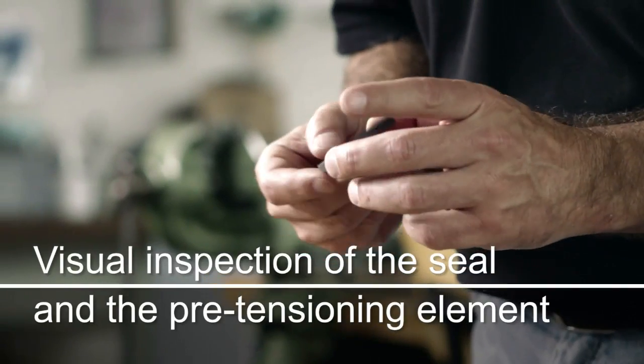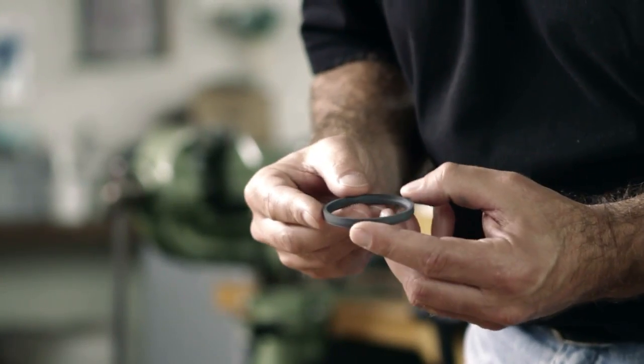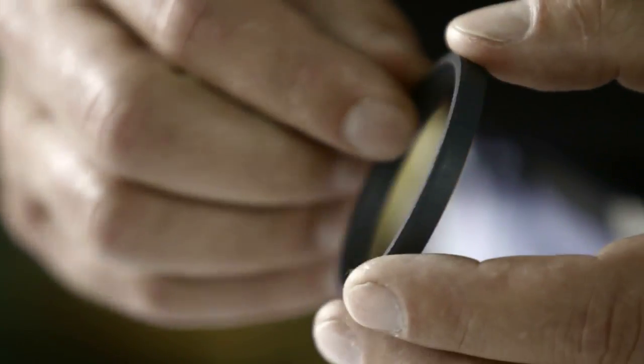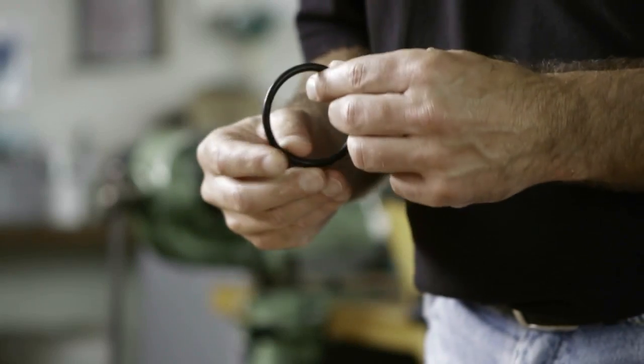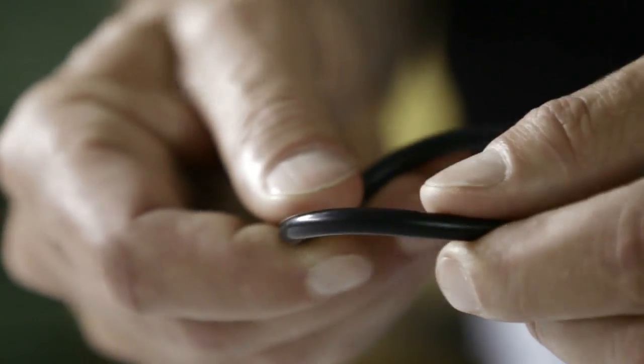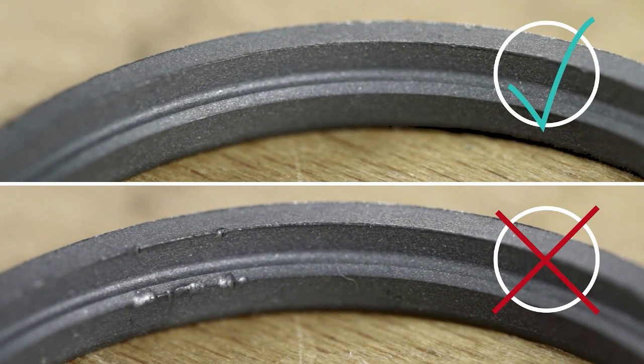Before assembly, the seal must be closely inspected for the following defects. No damage on the circumference of the sealing lip or the outer diameter. Check that the pre-tensioning element has no flash or damage. Any damage disqualifies a new seal from use.